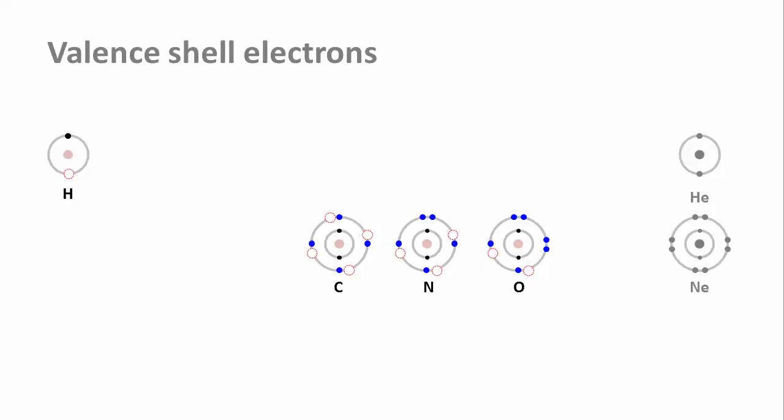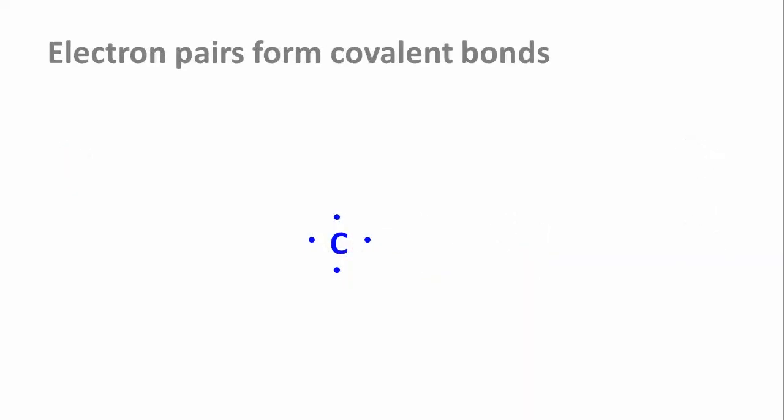And this is where the magic of chemistry happens. Atoms can come together and share an electron pair to fill up that valence shell. So if we simplify the drawing, a carbon atom with its four lonely electrons can pair up with four hydrogen atoms. Oxygen, on the other hand, already has two pairs of electrons and only two lonely ones, so it can only share electrons with two hydrogen atoms.